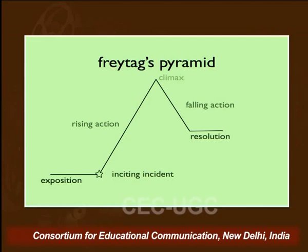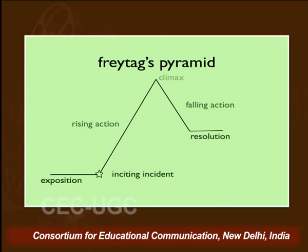If you look at this Freytag Pyramid Diagram, you can see what elements are involved. Number one is exposition, and there is a star which is called the inciting incident — we will talk extensively about that. Then there is rising action, climax, then falling action and resolution. A general perception people have is that climax is the end of the story. But climax is just the mid highest point, after which you have falling action and then the resolution.